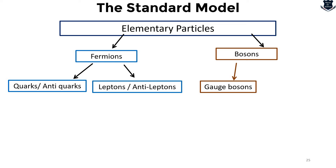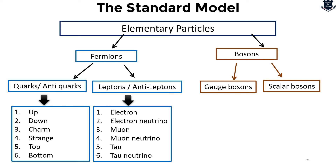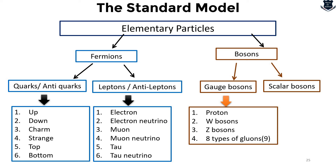Quarks can be subdivided into up, down, charm, strange, top, and bottom. Leptons can be divided into electron, electron neutrino, muon, muon neutrino, tau, and tau neutrino. Gauge bosons can be divided into photon, W bosons, Z bosons, and 8 (some say 9) types of gluons. Scalar bosons include the Higgs boson, for which Peter Higgs received the Nobel Prize. Fermions are those particles which obey Fermi-Dirac statistics, with spin one-half (like 1/2 and 3/2), and obey the Pauli exclusion principle — for example, electrons, protons, and neutrons.